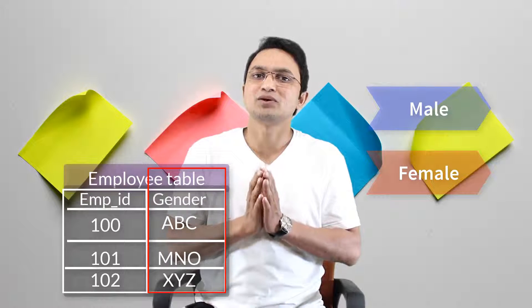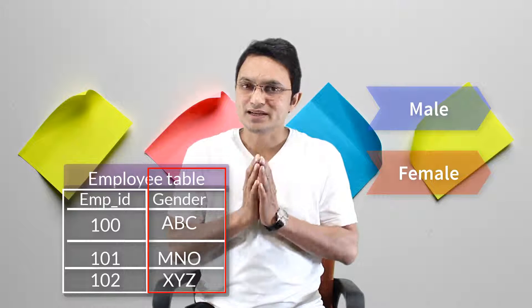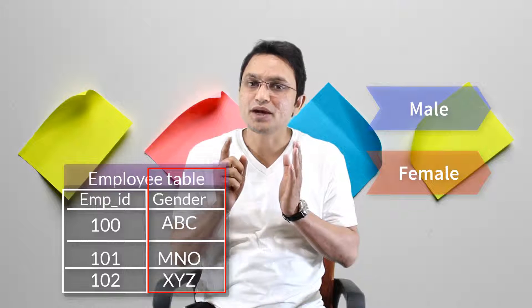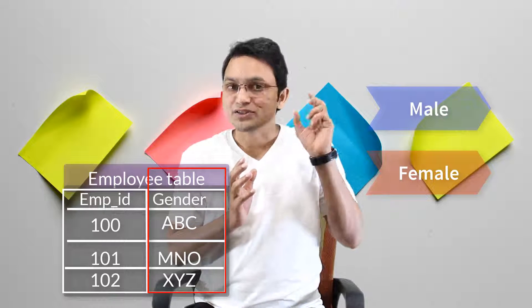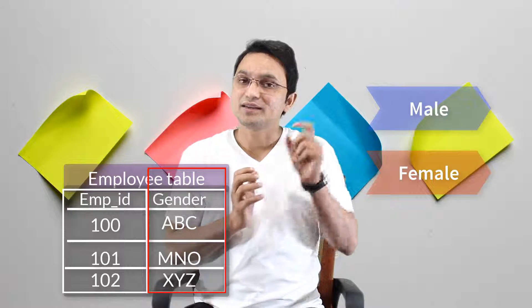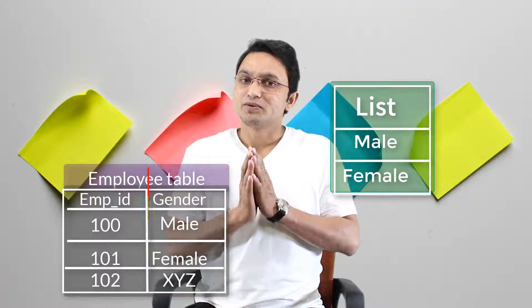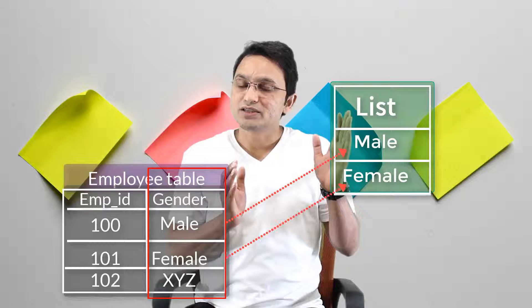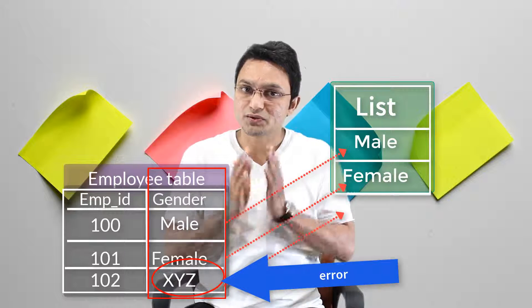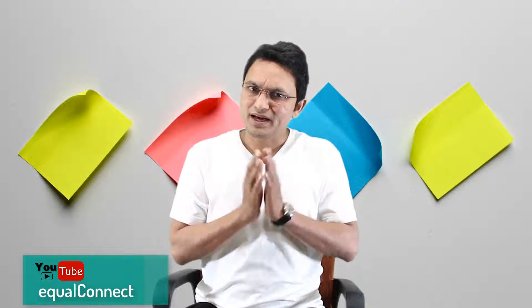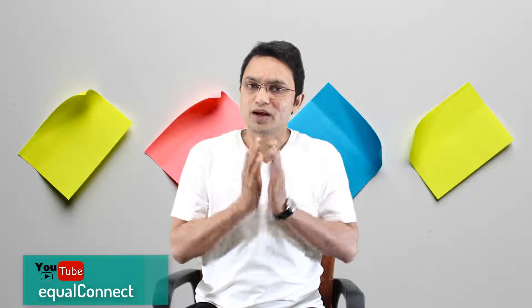You can impose such a rule with the help of the check constraint. The check constraint checks before inserting any value into the column whether that value exists in a defined list. That list contains 'male' and 'female'. If the value exists in this list, it allows the insert; otherwise it throws an error.